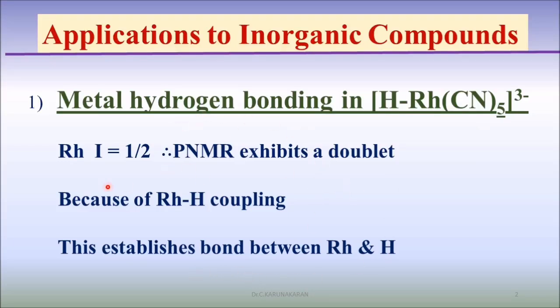Using proton NMR, the nuclear spin quantum number of rhodium nucleus is 1/2. Therefore, proton NMR gives a doublet because of the direct bond coupling. This establishes a bond between rhodium and hydrogen.